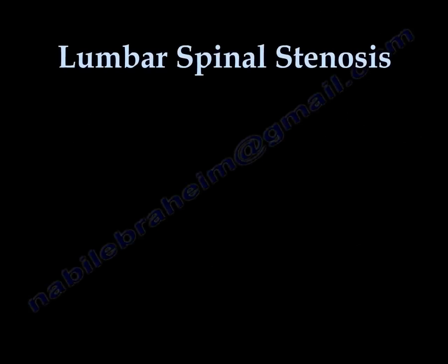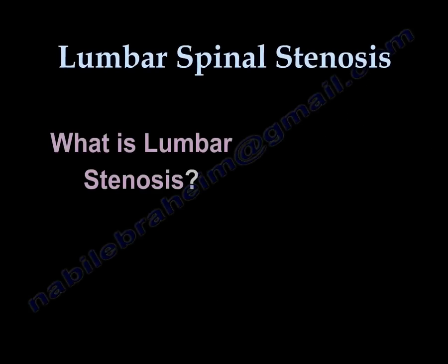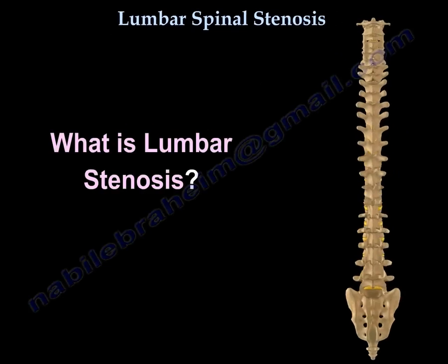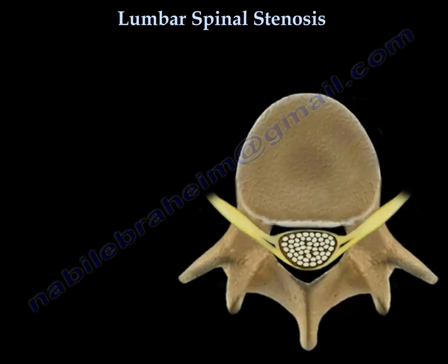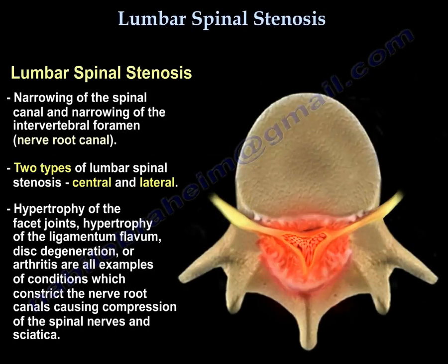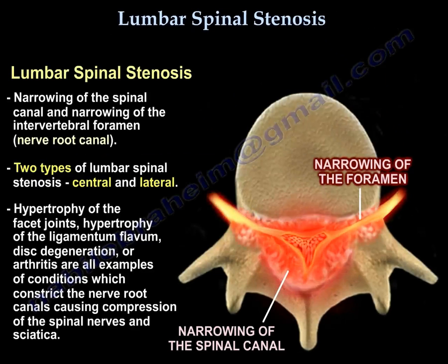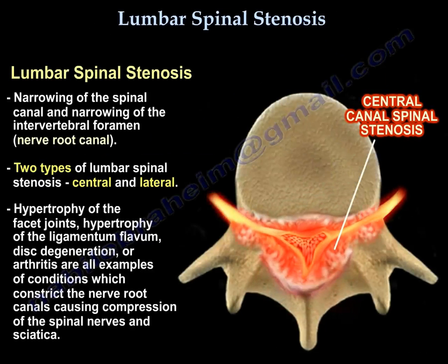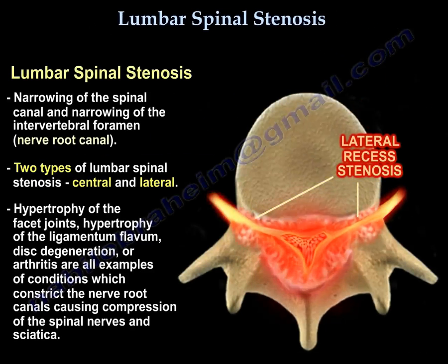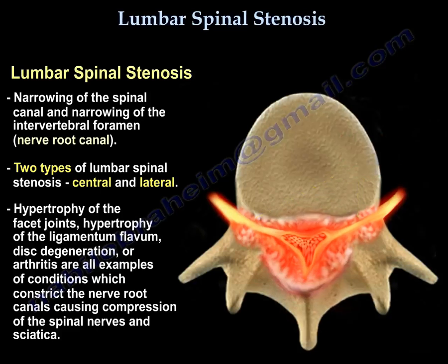Lumbar spinal stenosis is the narrowing of the spinal canal and narrowing of the foramen. There are two types: central stenosis and lateral stenosis. It occurs because of hypertrophy of the facets, the ligamentum flavum, and spine arthritis. This will cause compression of the nerve root.